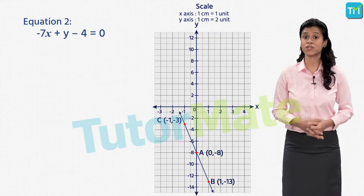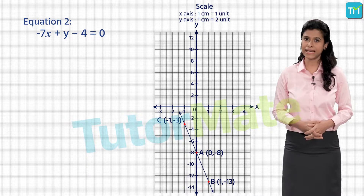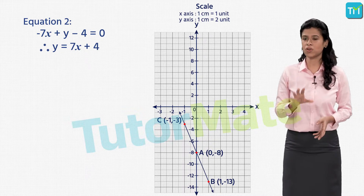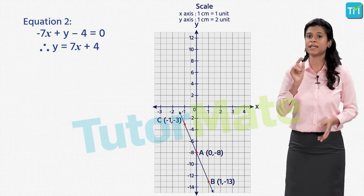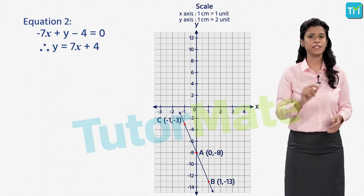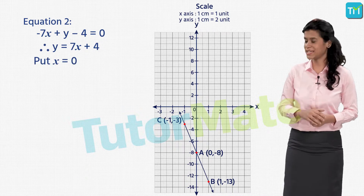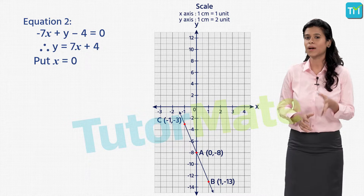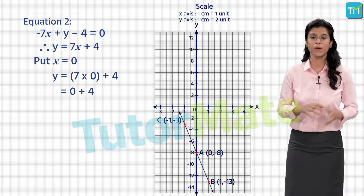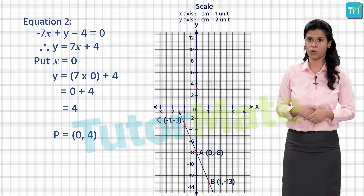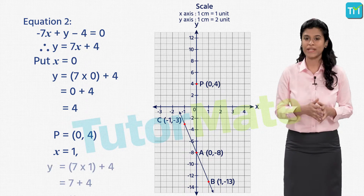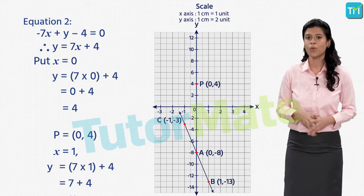Let's rewrite it by keeping y on the left hand side and taking the rest on the right hand side, giving us y is equal to 7x plus 4. Putting x equal to 0 gives us y equal to 7 into 0 plus 4, which is equal to 4. We plot the point 0 comma 4 and name it P.